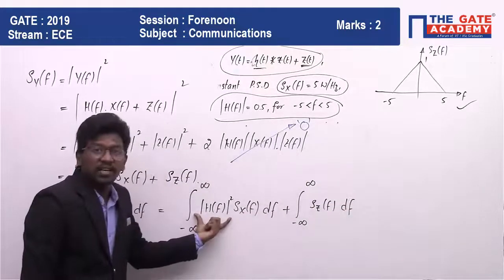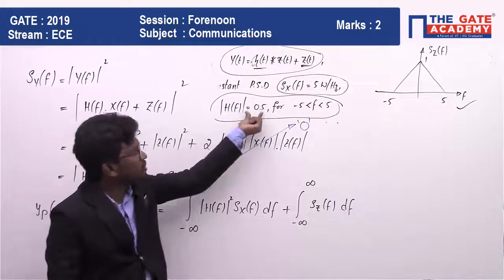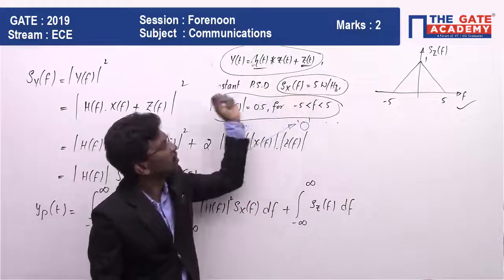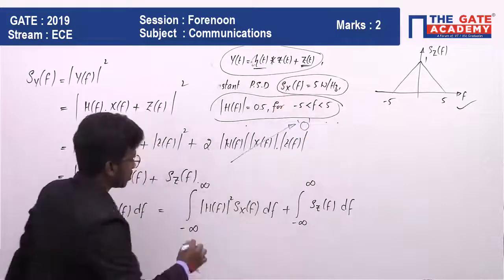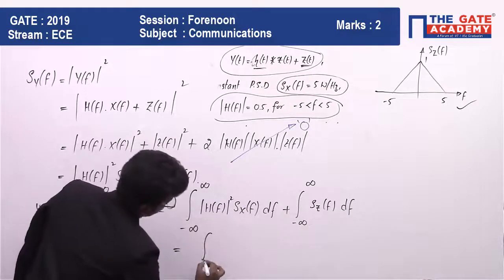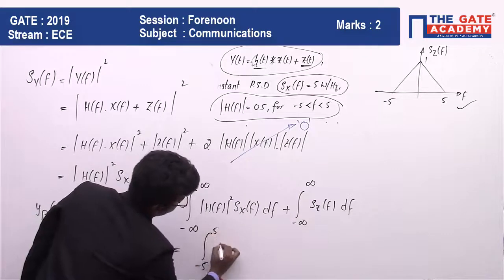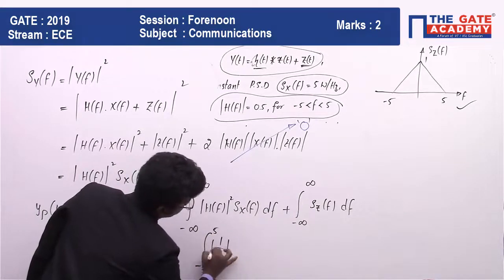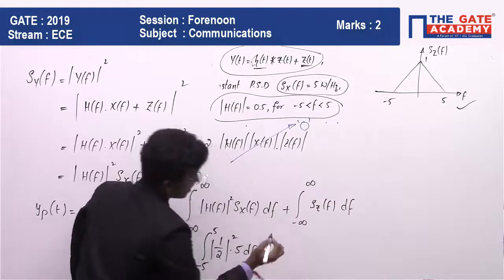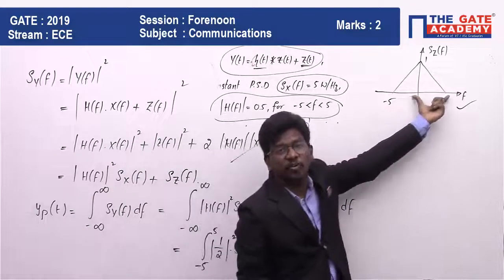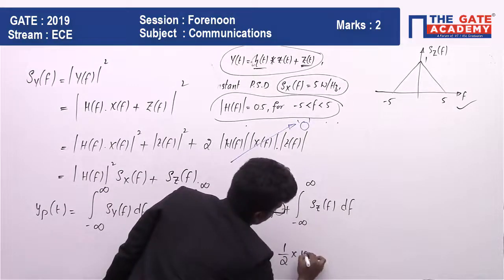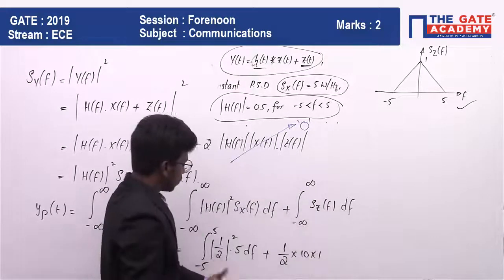The first part is integral from -5 to 5 of |H(f)|^2 times Sx(f) df, plus area under Sz(f). This is (1/2)^2, from -5 to 5, and this is 5 constant for entire range. You will get (1/4) times 5 times 10, which equals 50/4.